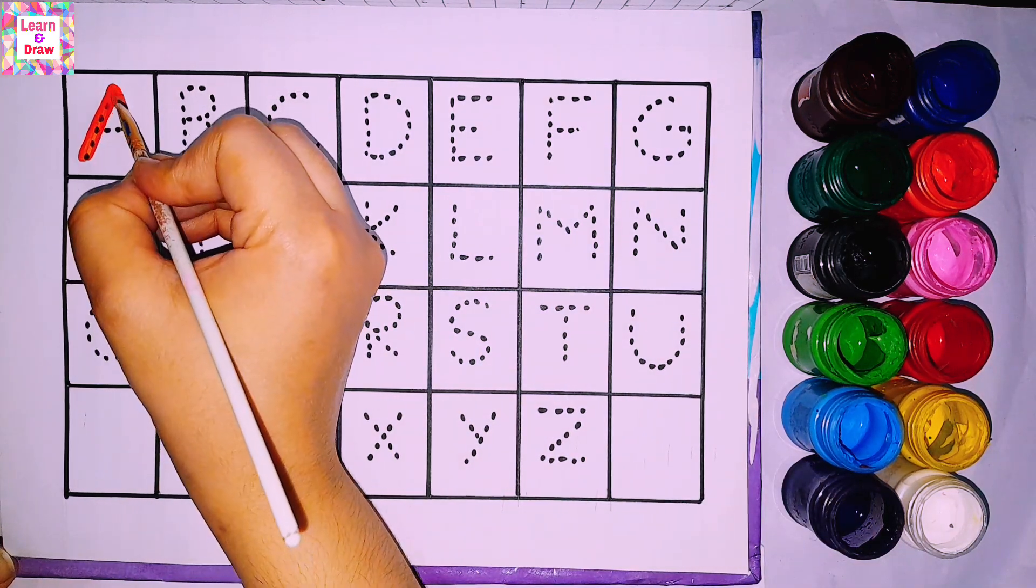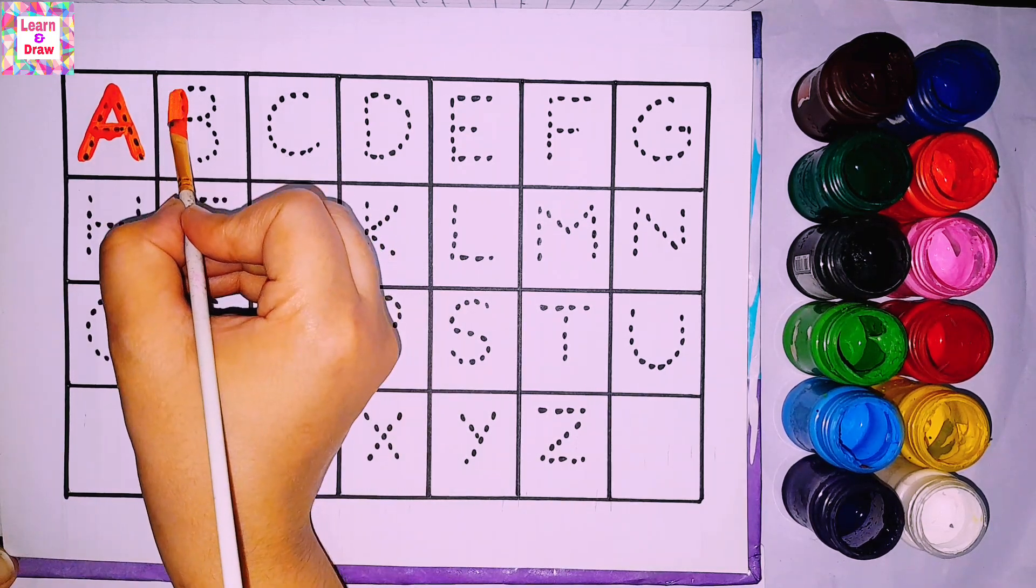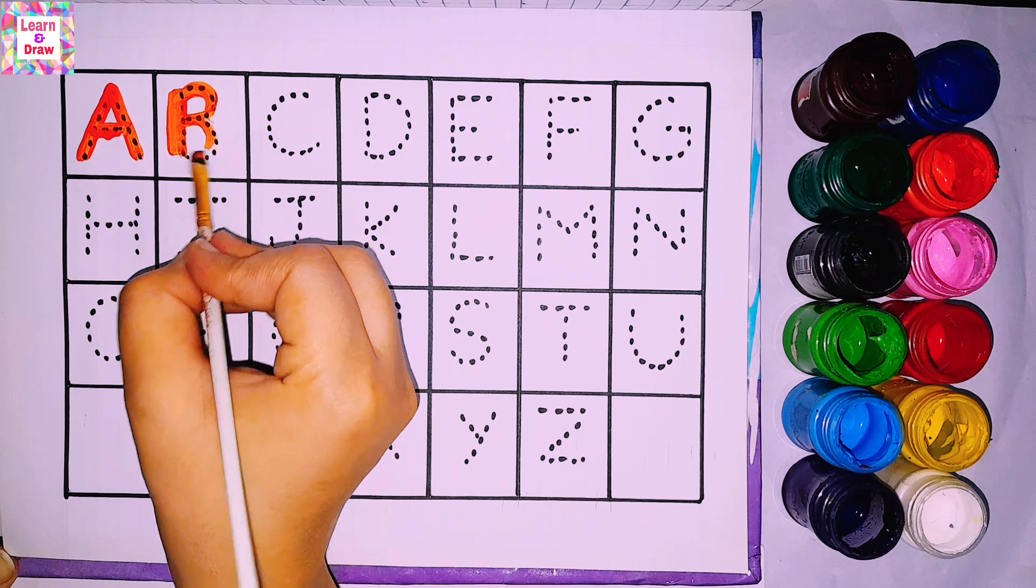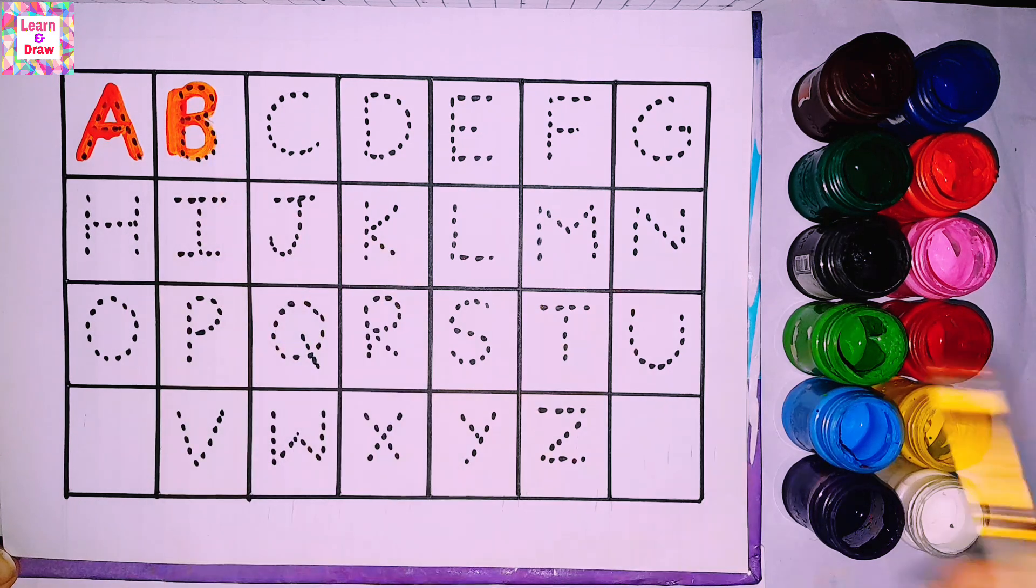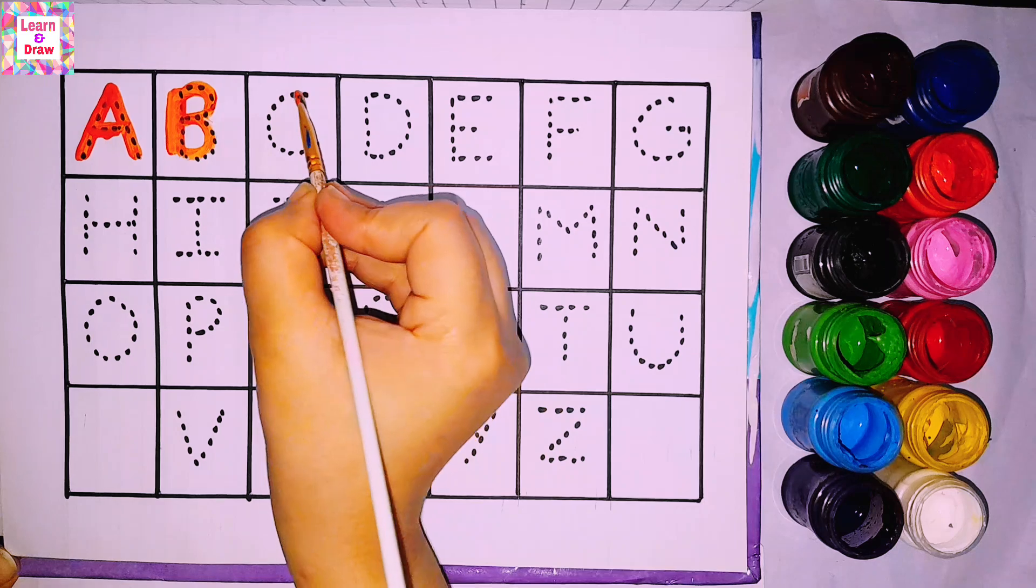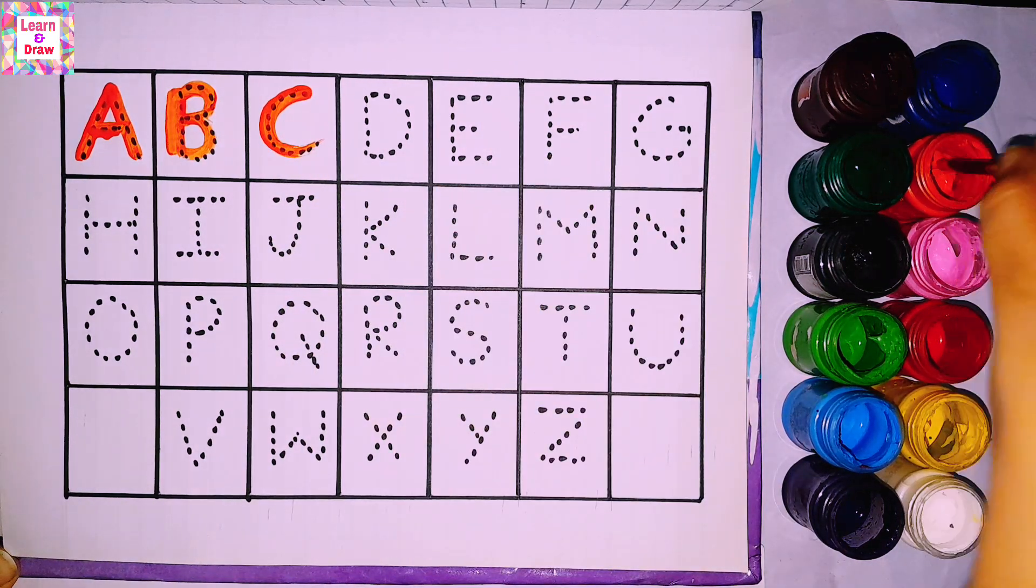A. A for ant. B. B for banana. C. C for cow.